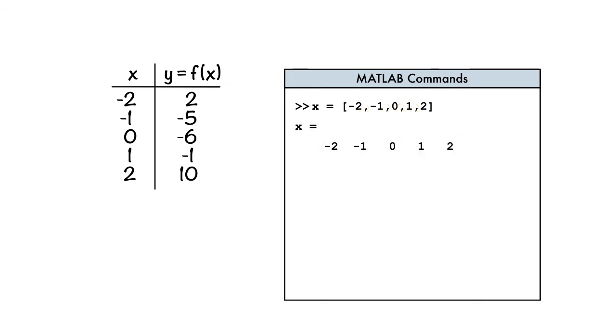But what if an application calls for a column vector instead? No problem. We use semicolons in place of the commas.